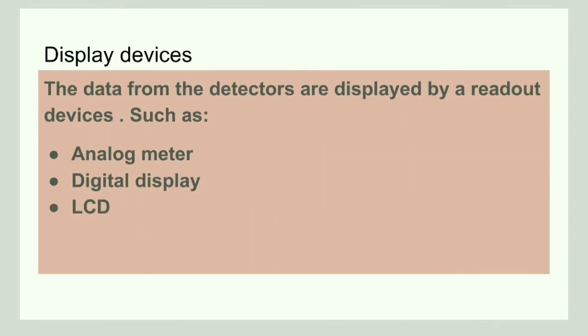The last component of a spectrophotometer is the display device. The display device shows the value obtained from the detector — the data from the detector is displayed here. Examples of display devices include analog meters, digital displays, and LCDs.